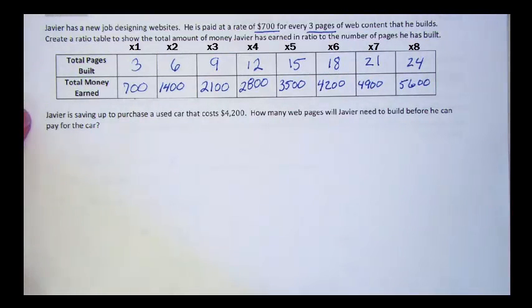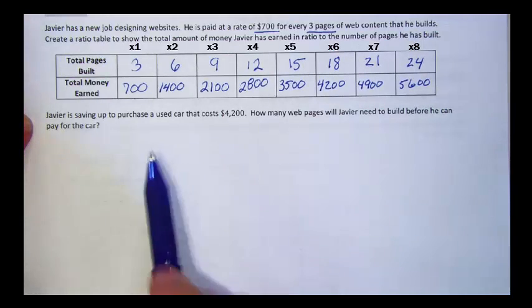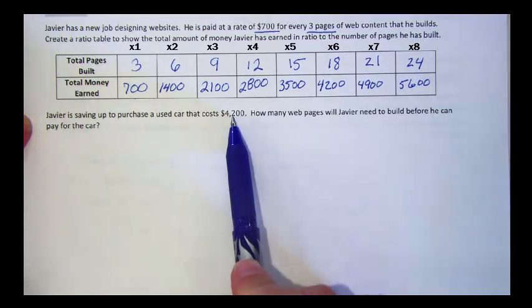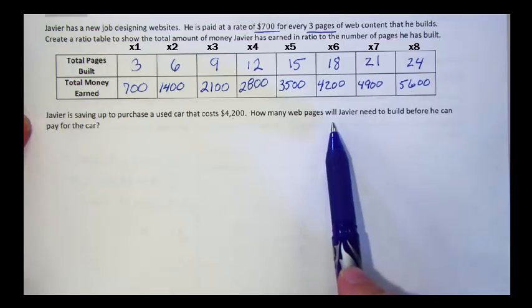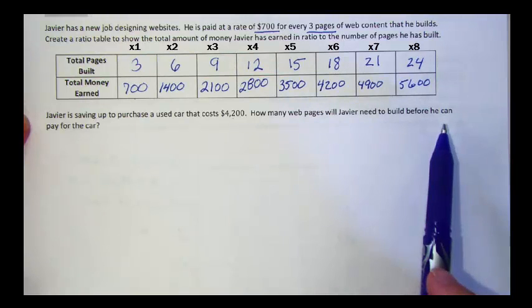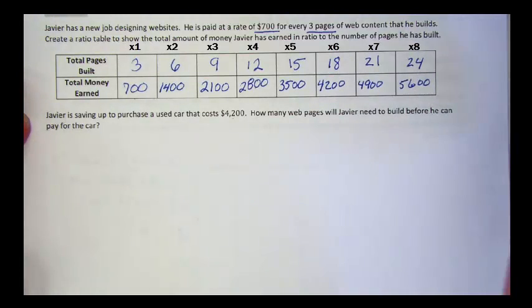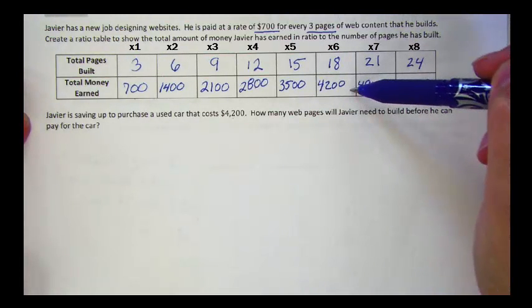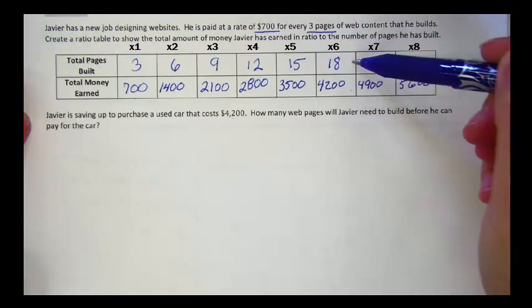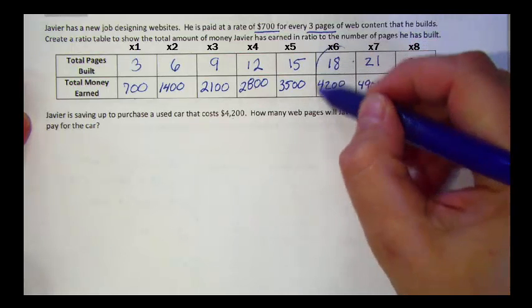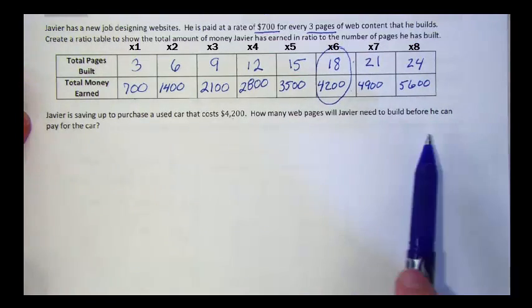If Javier is saving up to purchase a used car that costs $4,200, how many web pages will Javier need to build before he can pay for the car? We can look at our table to answer this question. Here's $4,200. He needs to build 18 pages. These tables can help us answer questions like this.